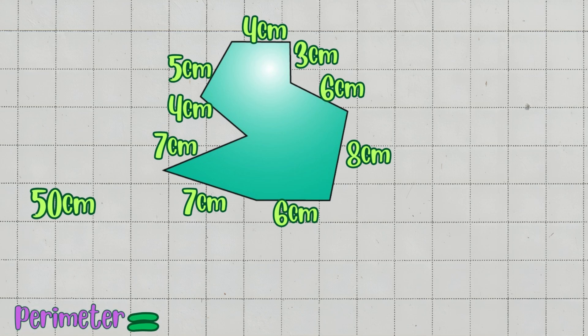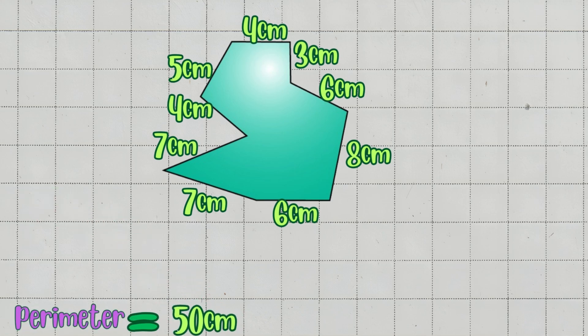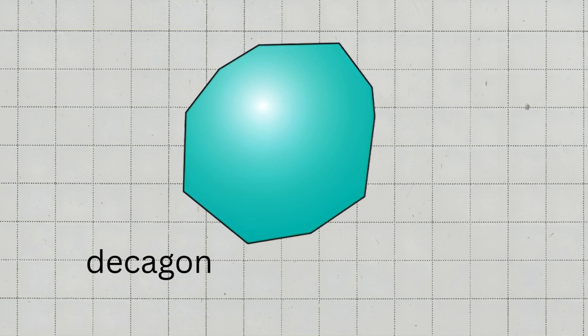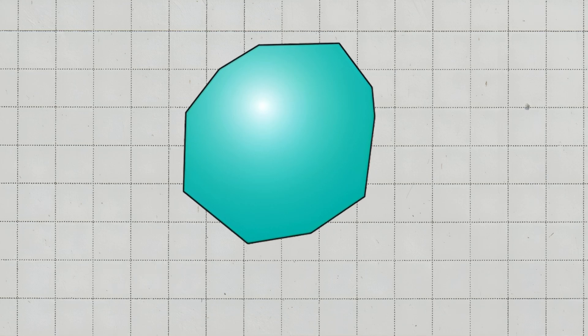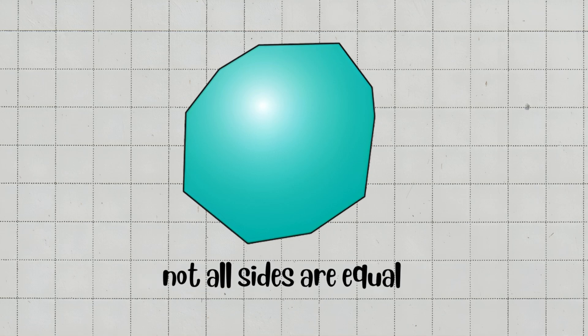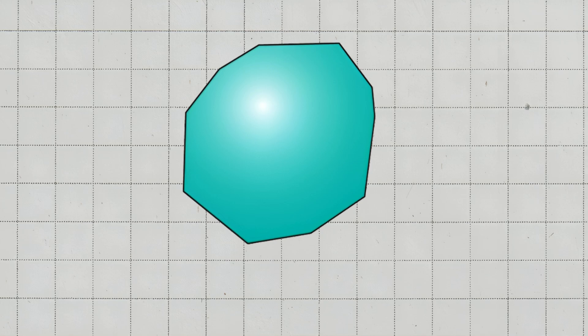Final answer: the perimeter of this irregular nonagon is 50 cm. Last example — a decagon is a polygon with 10 sides. When the sides have different lengths, it is called an irregular decagon because not all sides are equal. Let's say we have an irregular decagon with the following side lengths.